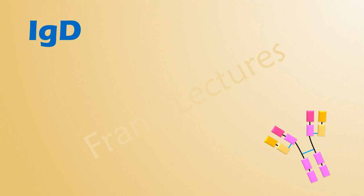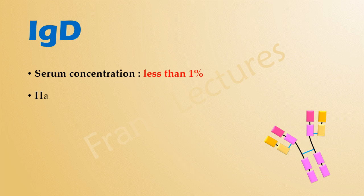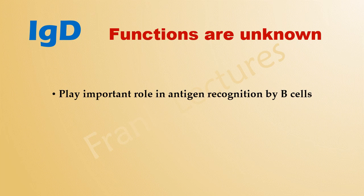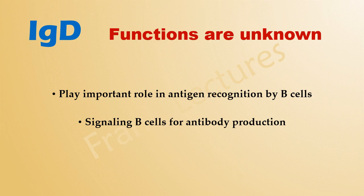IgD makes up less than 1% of the antibodies in the serum and has a half-life of only three days. Its functions are not fully known, but it appears to play an important role in the recognition of antigens by B cells and in signaling B cells to start antibody production.